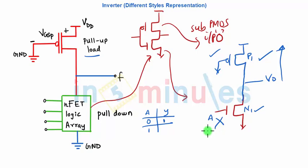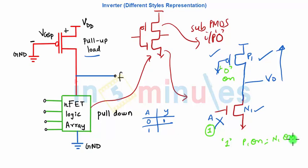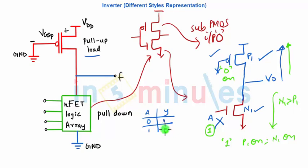However, when A is one, here is where the problem happens. The gate of P1 is already zero, so P1 is always on. When A is one, P1 is on because its input is grounded, and so is N1. P1 is trying to pull the output towards VDD, whereas N1 is trying to pull the output towards ground. So we have to ensure that N1 is stronger than P1, as discussed in the previous clip with the cake and cat example. If N1 is stronger than P1, the functionality is ensured and when input is one, output will be approximately equal to zero. This gives us an inverter in Zero NMOS style.